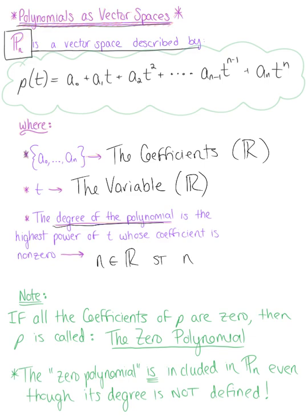This is such that n is strictly greater than or equal to zero. Now you might be thinking, how come we said the coefficient is non-zero but we're including zero here? That leads us to our special case: if all of the coefficients of this polynomial are zero, then p is called the zero polynomial. Even though the degree is not defined here, the zero polynomial is included in P sub n.